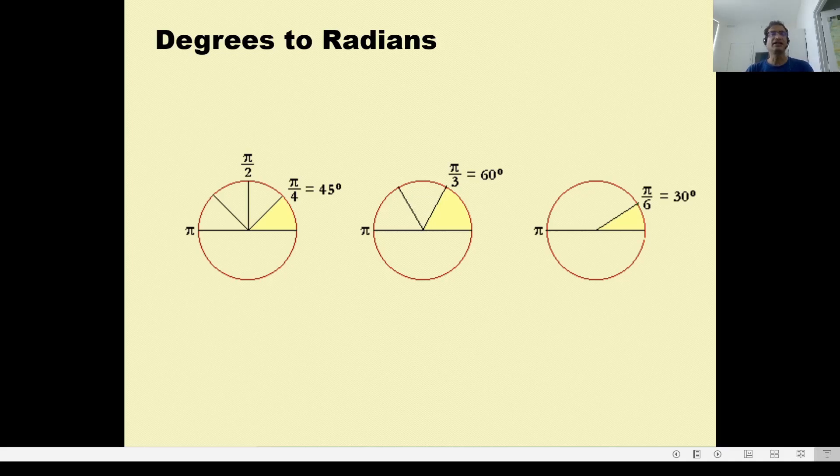Radians and degrees are just two different units, if you will, for measuring angles. As it shows here, we use the notation, the symbol pi to show 180 degrees or half the circumference of a circle. If pi is 180, then pi by 2 has to be 90, and pi by 4 is 45 degrees, which is what this shows.